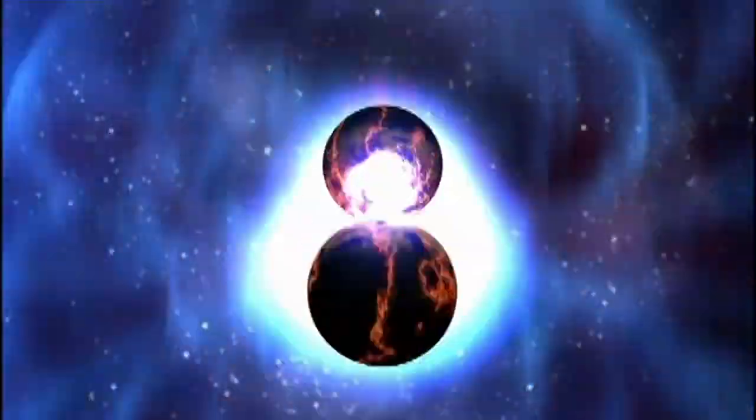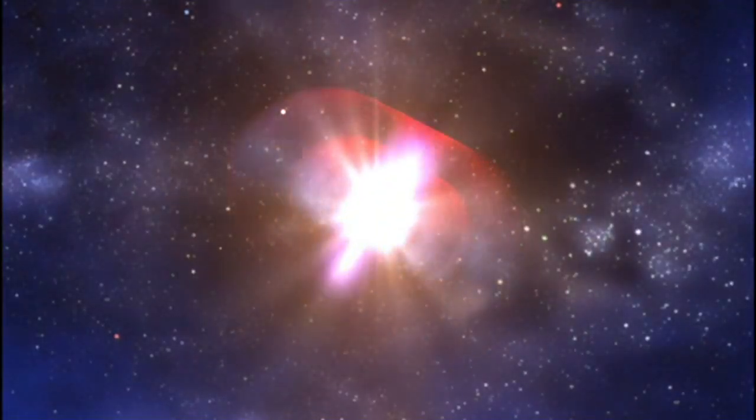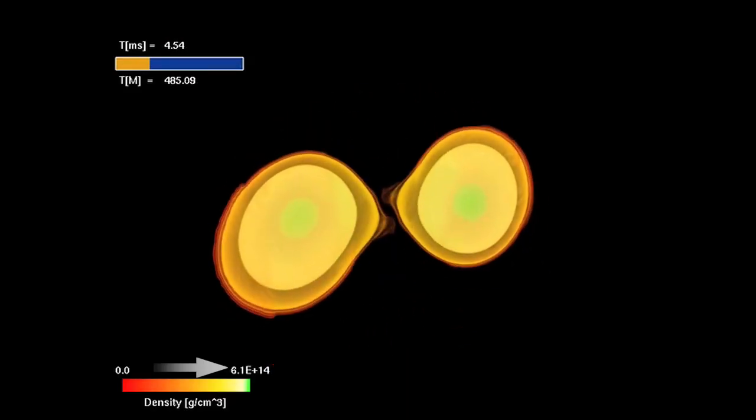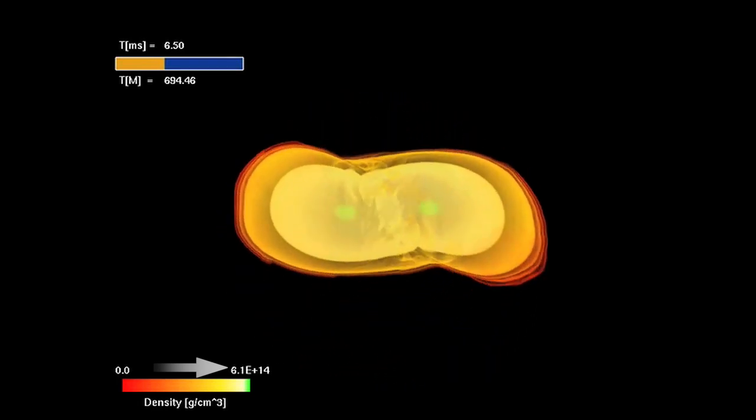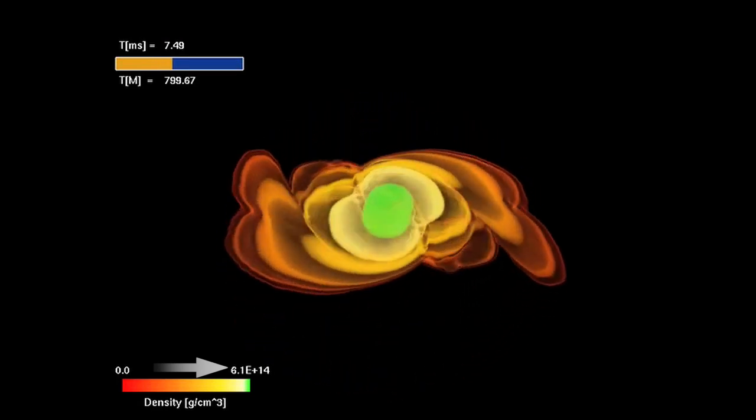When two orbiting neutron stars collide, they merge and form a black hole, releasing enormous amounts of energy in the process. Armed with state-of-the-art supercomputer models, scientists have shown that colliding neutron stars can produce the energetic jet required for a gamma ray burst.